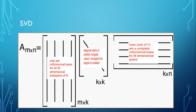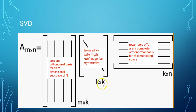Now let's discuss SVD itself. SVD is based on a theorem that says any matrix can be decomposed into three different matrices. For example, if I have a matrix of dimension m×n, it can be decomposed into three matrices: the first matrix U, the middle matrix D, and the last matrix V. U is of dimension m×k, D is of dimension k×k, and V is of dimension k×n.